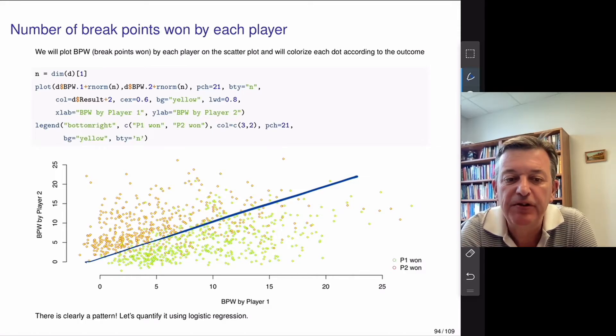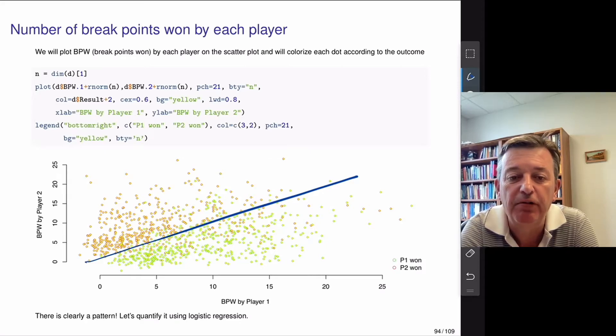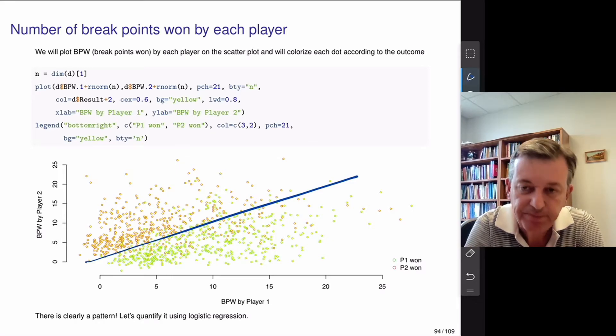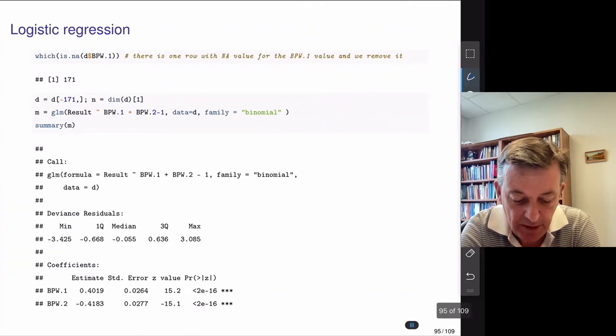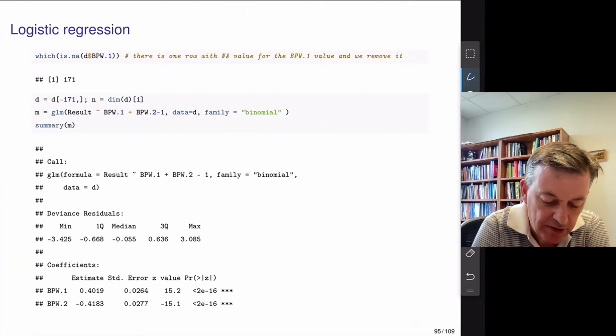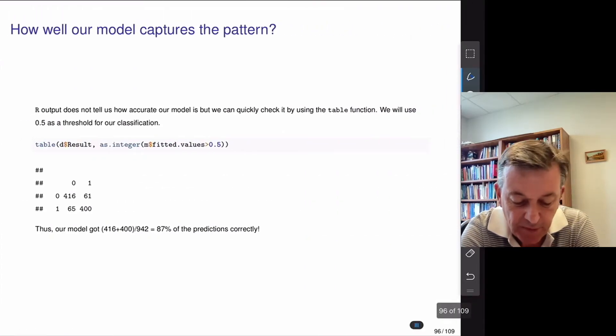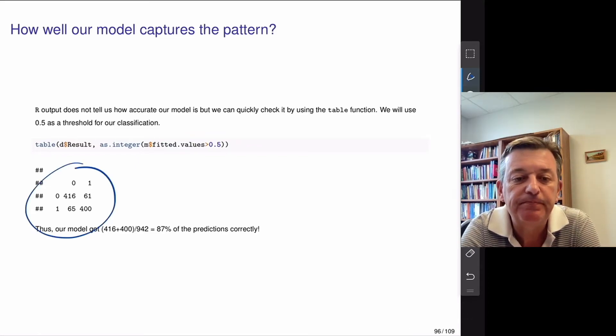And you can see, if you plot number of break points won by each player, so player one versus player two, it doesn't quite separate. But, of course, the obvious fact, the more break points you win, the higher the odds are of you winning. Something called a support vector machine, which is very similar to logistic regression, does its best to try and split these things out. And again, the idea is, you can see how valuable these break points are. So maybe training up the players to be more focused when it comes to break points would benefit them.